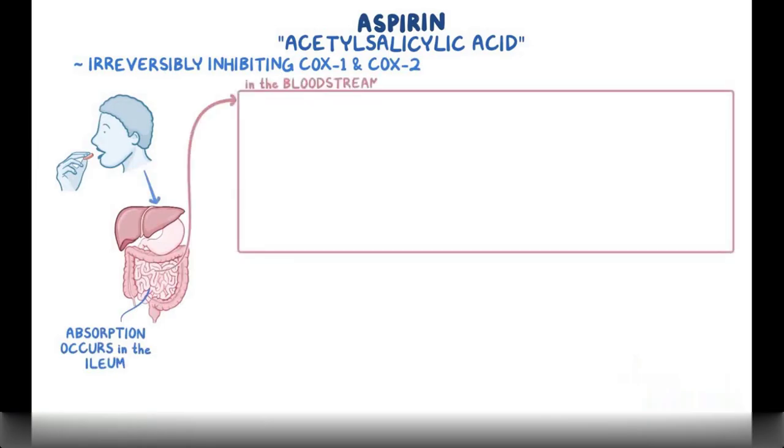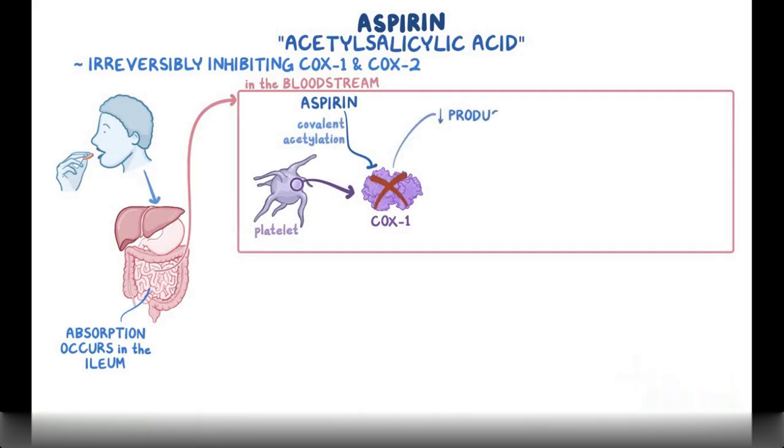Once absorbed into the bloodstream, aspirin irreversibly inhibits COX-1 in platelets by covalent acetylation, thereby decreasing production of thromboxane A2 in platelets.